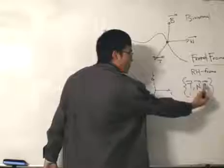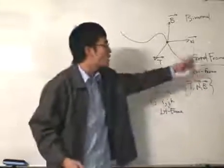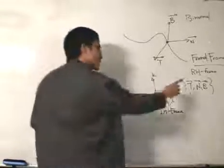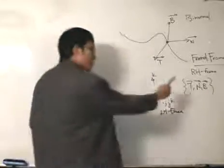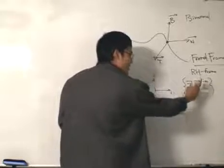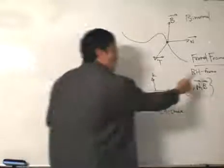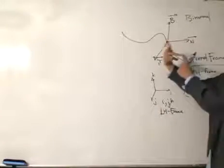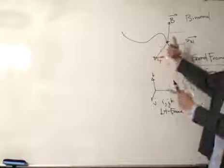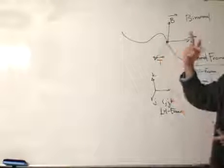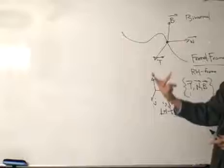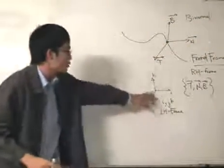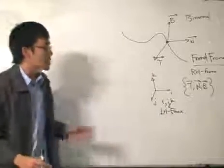We say that vectors T, N, and B form a right-handed basis of three mutually perpendicular vectors. What that means is: if you use your right hand to represent the three vectors, where your index finger represents the first vector and your middle finger represents the second vector, your thumb will represent the third vector — in this case, the binormal. So T goes in one direction, N goes in another, and the binormal points upward.